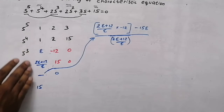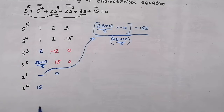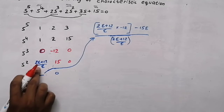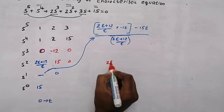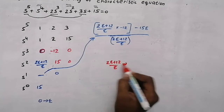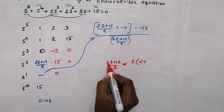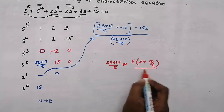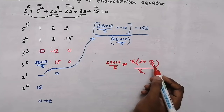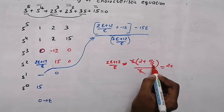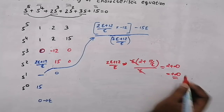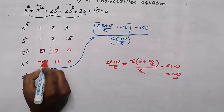Now, after finding all the elements in the first column, we need to replace epsilon by 0. We replaced 0 with epsilon earlier, and now after getting all these values we need to replace epsilon with 0. So this element will be 0. For finding the next element, which is (2 epsilon + 12) / epsilon, take epsilon outside from the numerator: we get epsilon into (2 + 12/epsilon), and the denominator epsilon cancels. Now substitute 0: we get 2 plus 12 by 0, and 12 by 0 is infinity. So we will get a positive infinite value here.